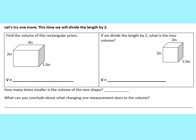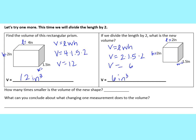We're going to try one more — this time we will divide the length by 2. Find the volume first using V = length × width × height and try that on your own. The volume of the first rectangular prism was 12 inches cubed. When you divide the length by 2, the new volume is 6 inches cubed.